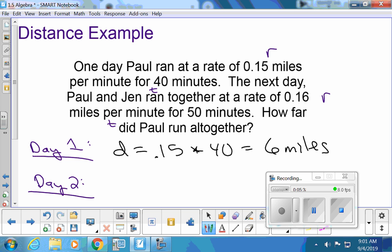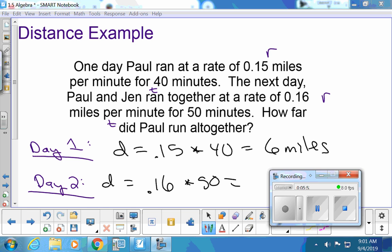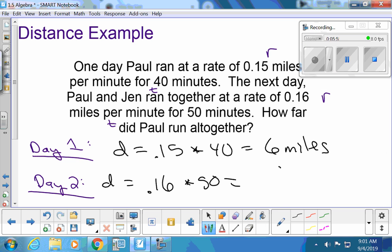And then day two, same deal. They are going a little faster. 0.16 miles per minute for 50 minutes. They're running faster and for more time. 8 miles. So it looks like Paul did 14 miles in two days. He's training. Marathon runner at home.